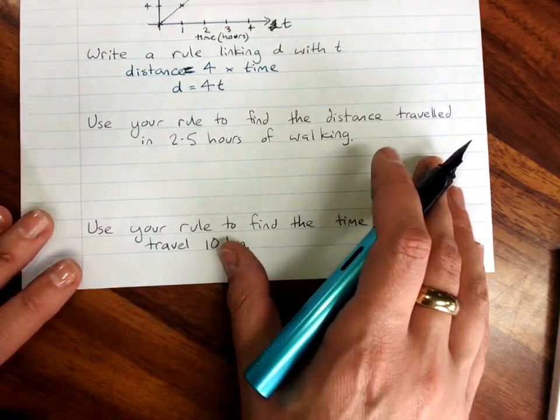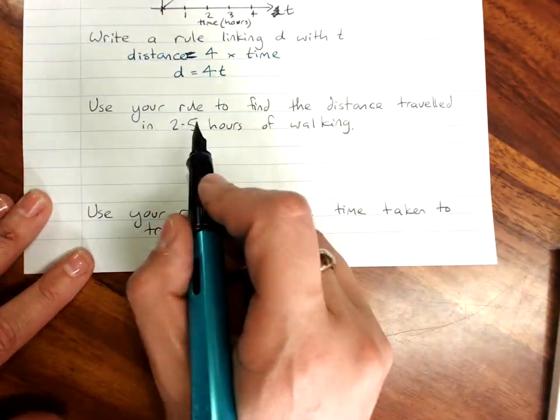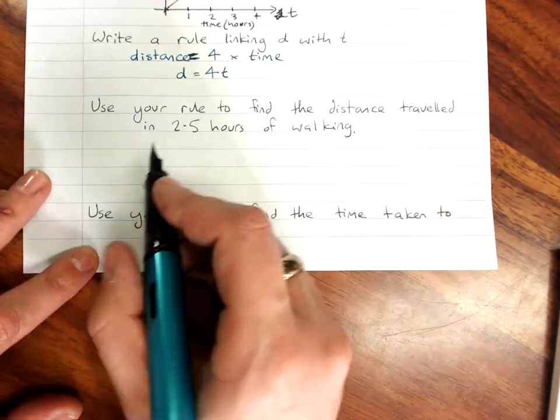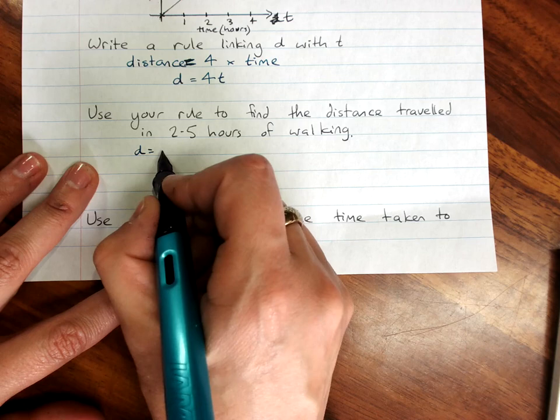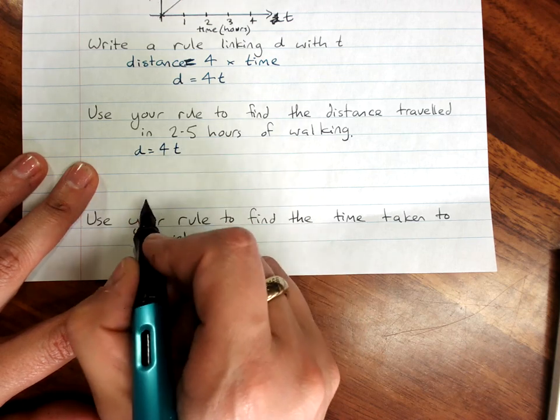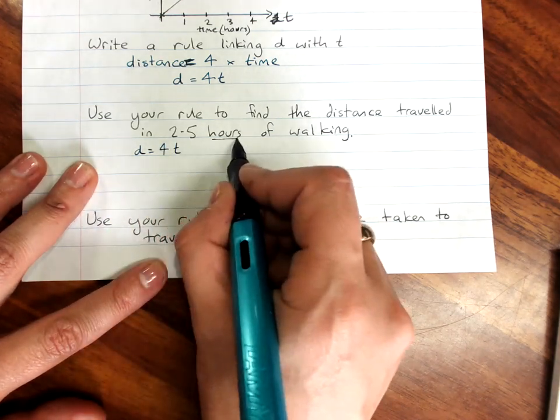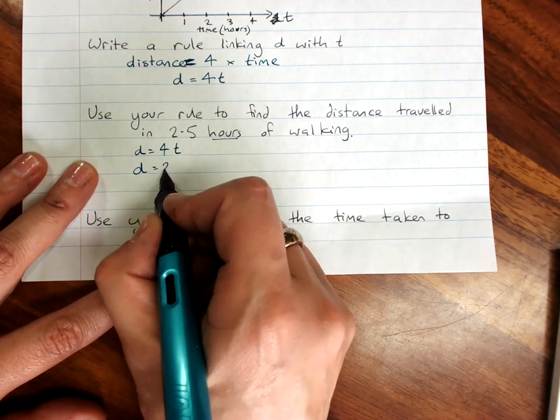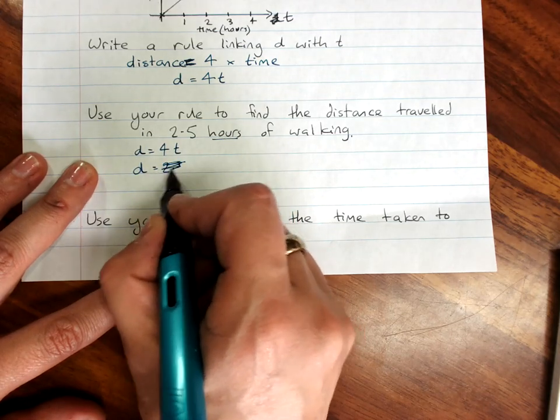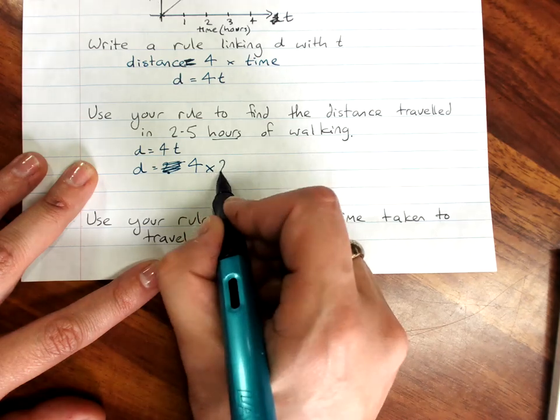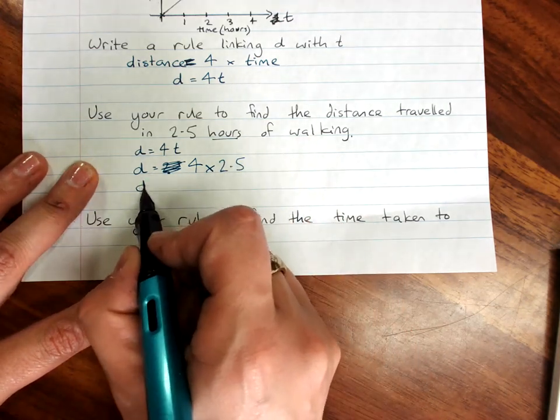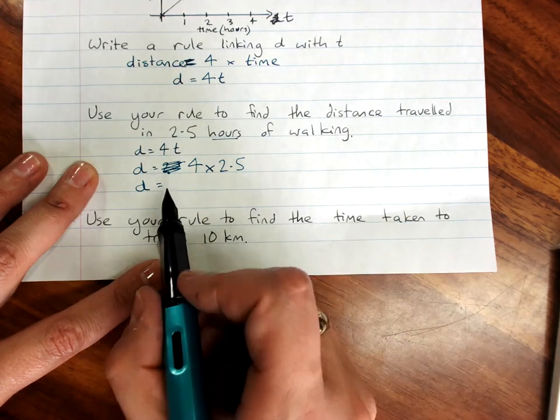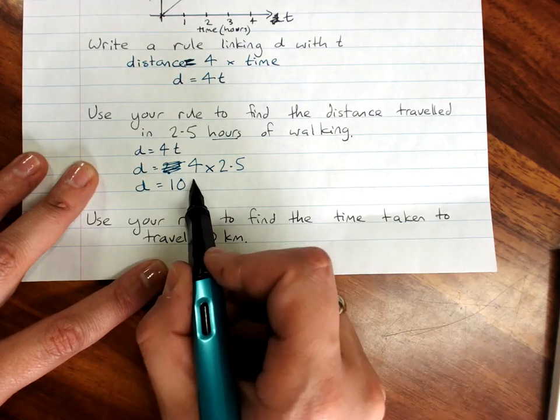Then use your rule to find the distance traveled in 2 and a half hours of walking. Write your rule. Distance equals 4 times time. Substitute on what we know. We know it's 2.5 hours. Distance equals 4 times 2.5. And 2 and a half times 4. Distance equals 10 kilometers.